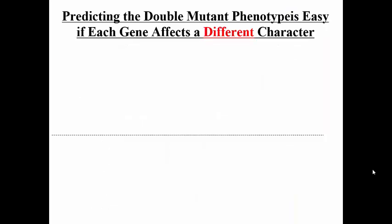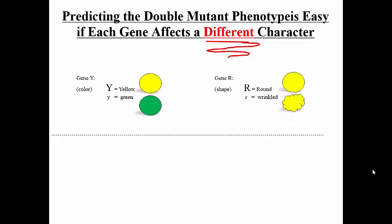Let's predict the double mutant phenotype. One important thing to note: it's very easy to predict the double mutant phenotype if each gene affects a different character. We had two genes — Y gene and R gene — where Y affected seed color and R affected seed shape. Since they don't influence each other, it's straightforward to predict the phenotype of the double mutant, which would be wrinkled and green.